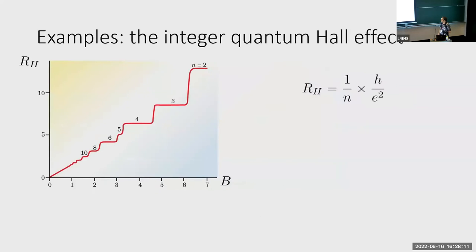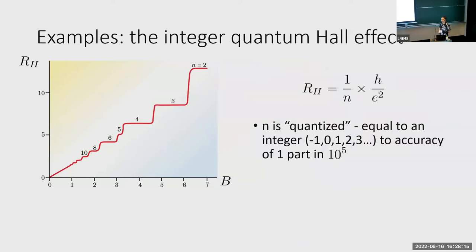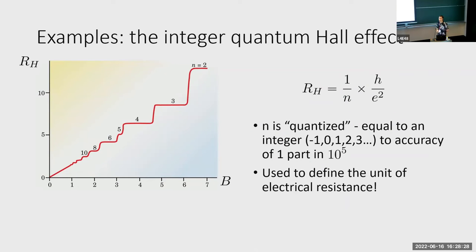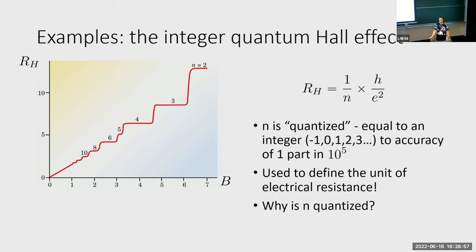What you find experimentally is that this N is quantized — it's equal to an integer: minus 1, 0, 1, 2, 3, and so on — to an accuracy that is incredibly precise, one part in ten to the fifth. This is so precise that it's used in metrology experiments to define the unit of electrical resistance. It's very unusual that you would find some quantity that can vary continuously, yet the measurement you get says it is exactly 3 — not 2.99, not 3.01, but 3. So how is it that this N is so well quantized? That's a really remarkable phenomenon. And this is where the topology comes into play. What I'm going to show you is that N is a topological invariant.